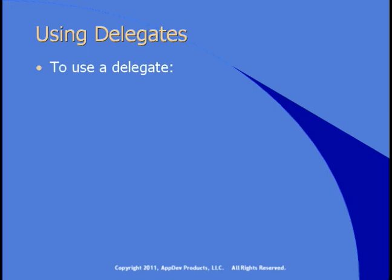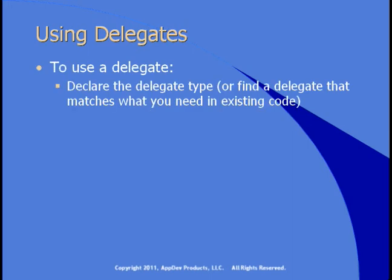Array.findAll uses an instance of a delegate type to determine what you want to do as it iterates through each item in the array. To use a delegate, you have to declare the delegate type, or if you want to use one that already exists, find a delegate that matches what you need in existing code or in the .NET Framework.